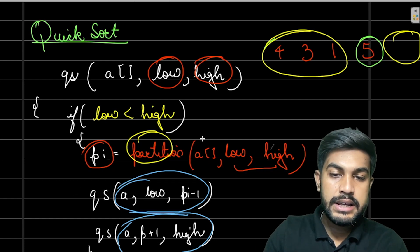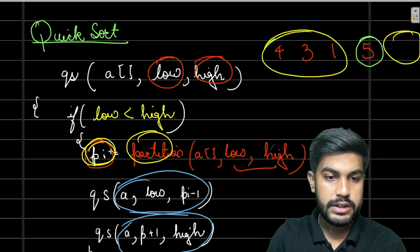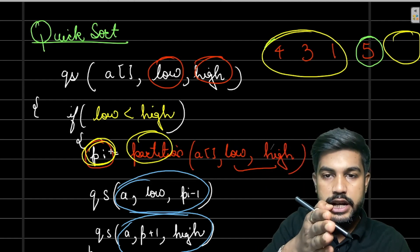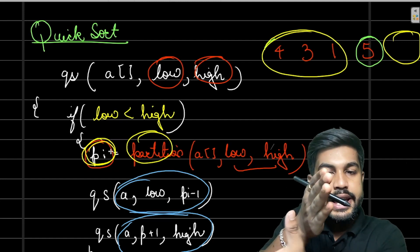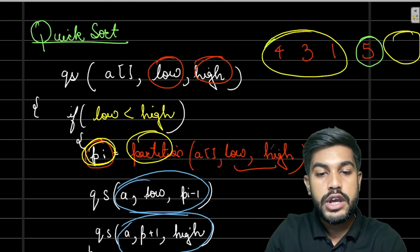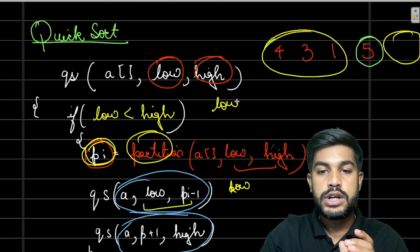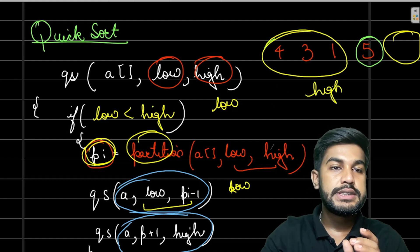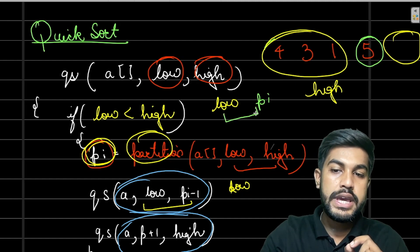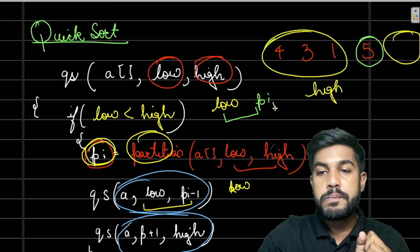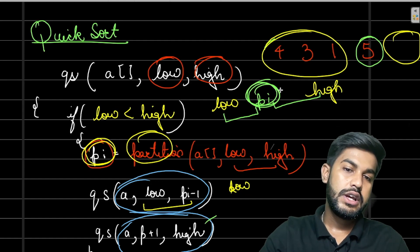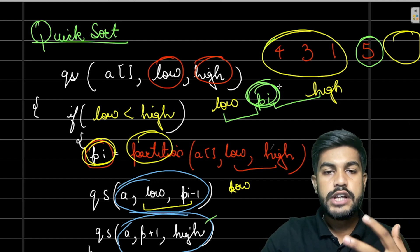Once the element is placed at its correct position at index p_i, the elements before it and after it still need to be sorted. So we recursively apply QuickSort from low to p_i minus 1 on the left side, and from p_i plus 1 to high on the right side. This is how QuickSort works, and the main thing that makes all the difference is the partition function.